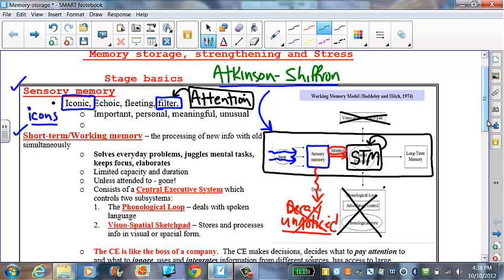The rule of thumb is unnoticed means forgotten. What things do we tend to notice? We tend to notice things that are important to us, things that matter to us in the moment.